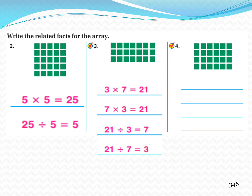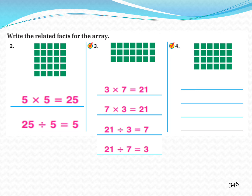Question 4. This array has 6 columns and 4 rows. The total number of tiles is 24. I will use 4, 6, and 24 to write the related facts for this array.